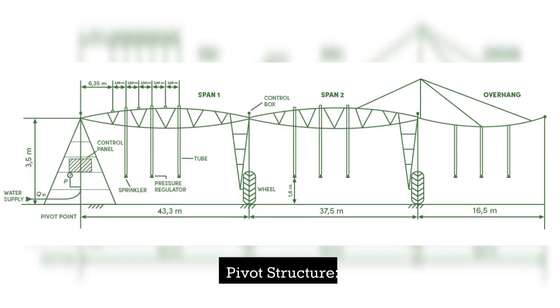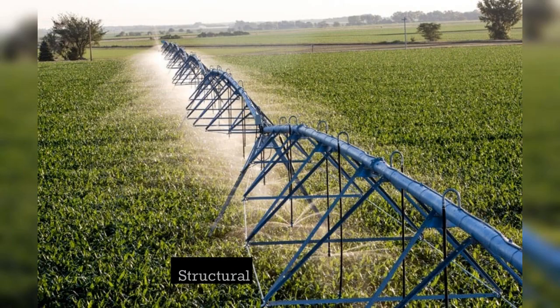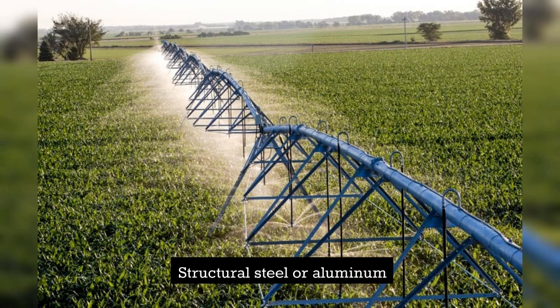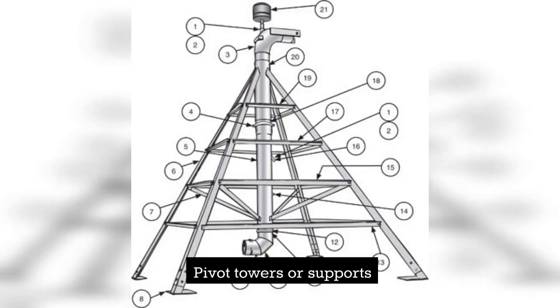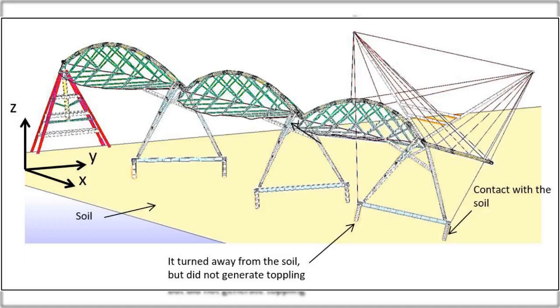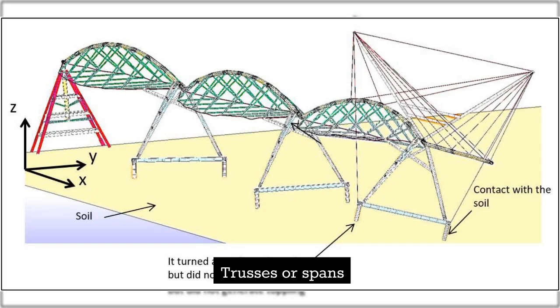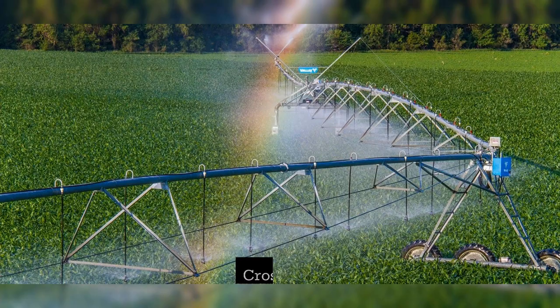Pivot structure: structural steel or aluminum. Pivot towers or supports. Trusses or spans, and cross arms.